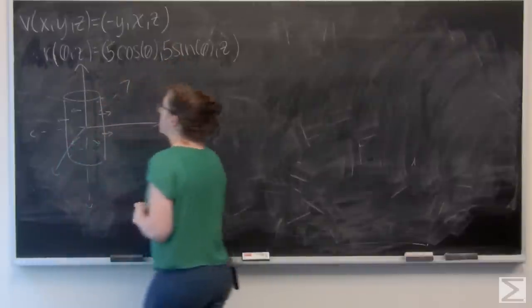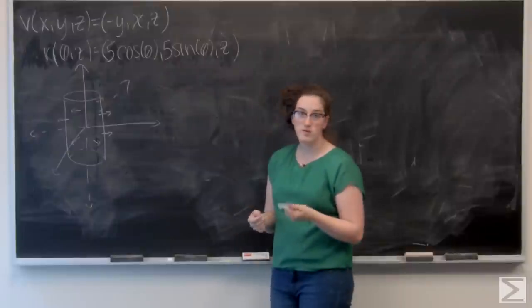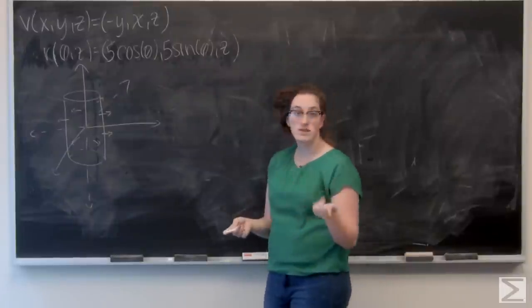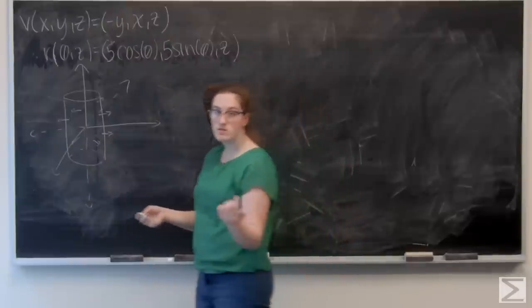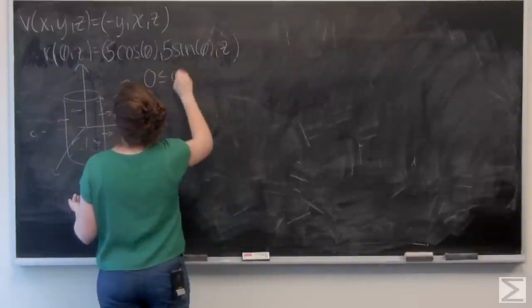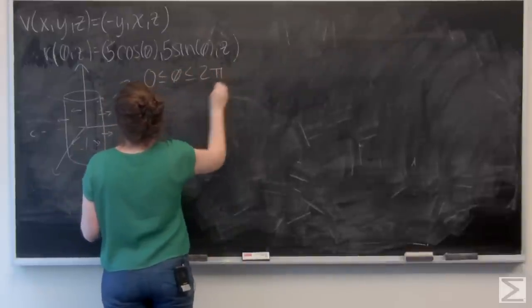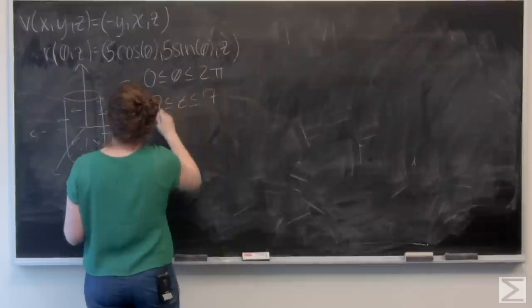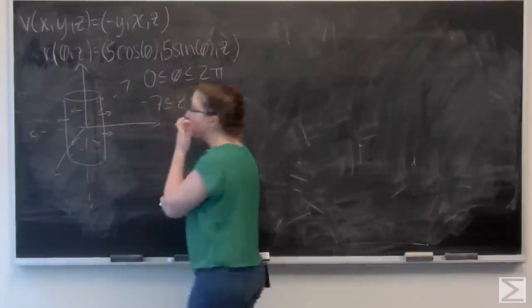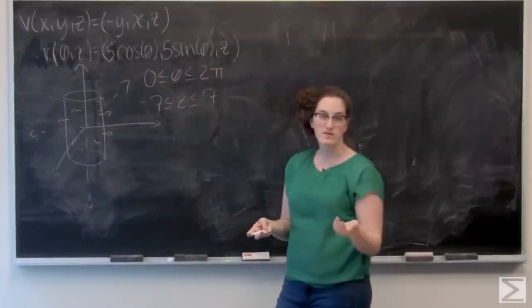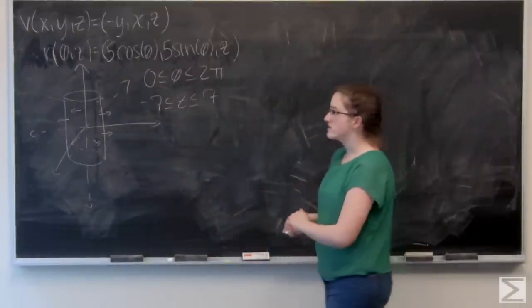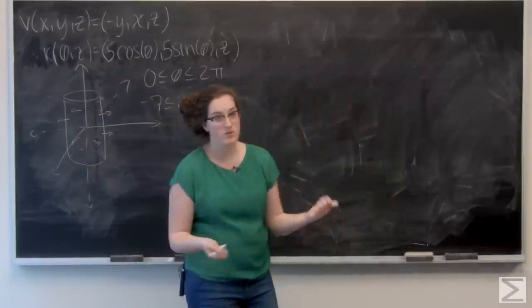So I've got r of theta and z equals 5 cosine theta comma 5 sine theta comma z. And theta goes from 0 to 2 pi, z goes from negative 7 to 7. And now I want to find the rate at which fluid is flowing through this cylinder in meters cubed per second. So I need a flux integral, and I'm just going to write down what the general form of that is.